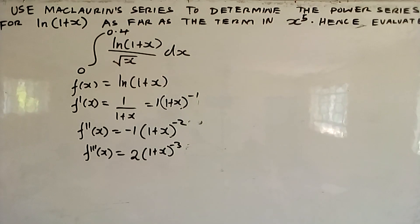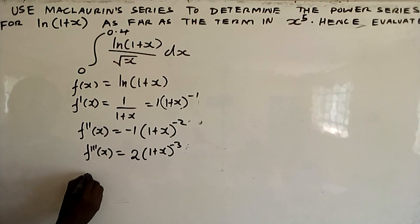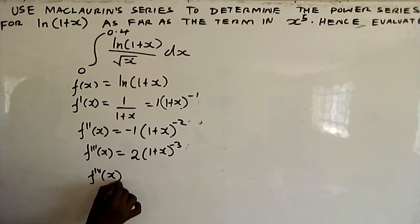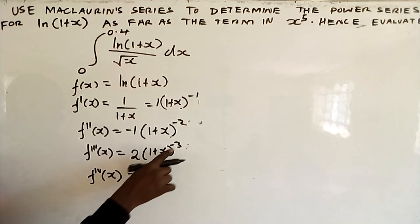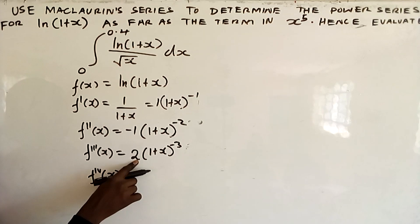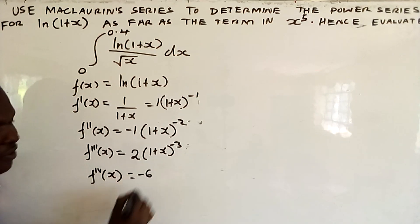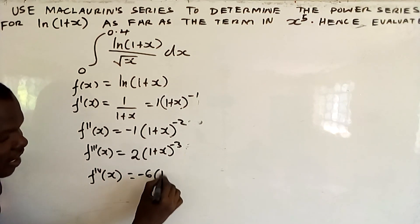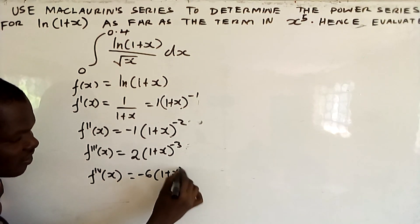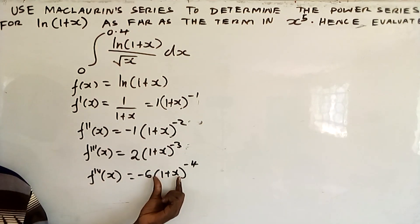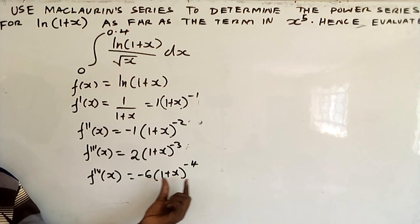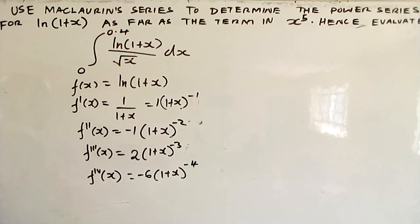Differentiating for the fourth time: negative 3 times 2 gives negative 6. Then (1+x) with the power reduced by 1 becomes negative 4. Differentiating the inner function gives 1, so times 1 it remains as it is.